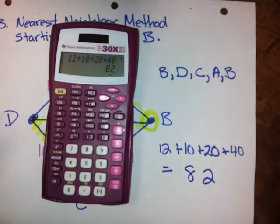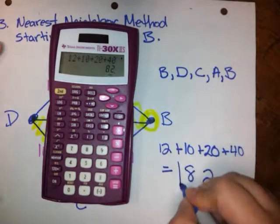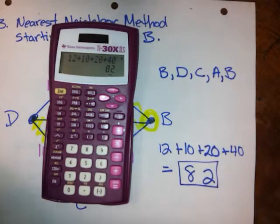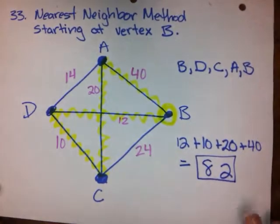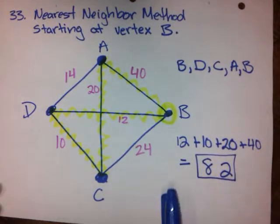12 plus 10 plus 20 plus 40, and that gives us 82. Yes, I just had to check to make sure that the answer was correct. So if we use the nearest neighbor method starting at vertex B, then the value of the Hamilton circuit that we get is 82.